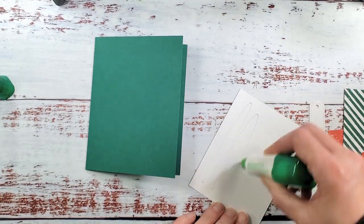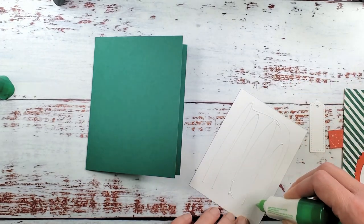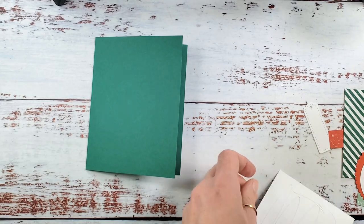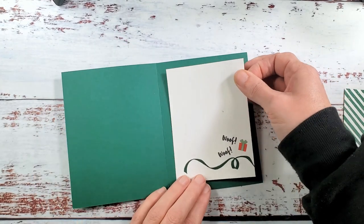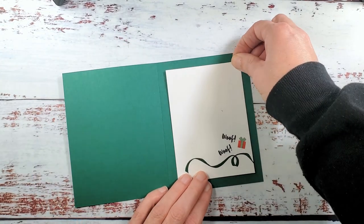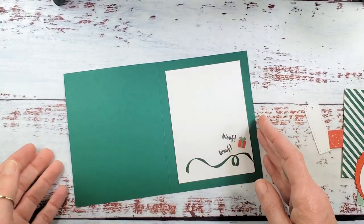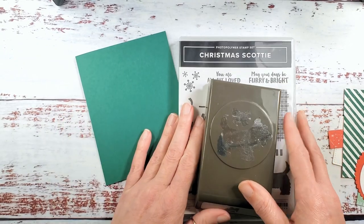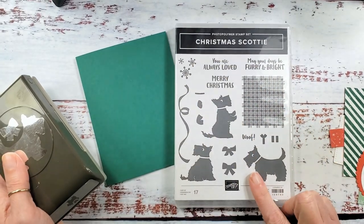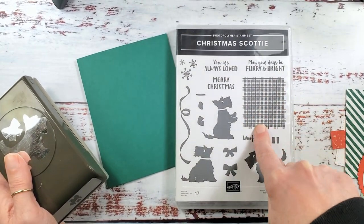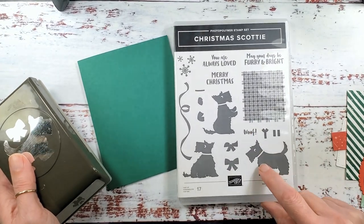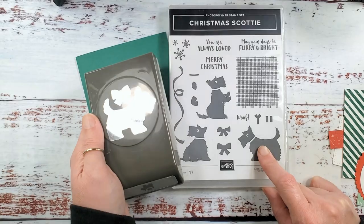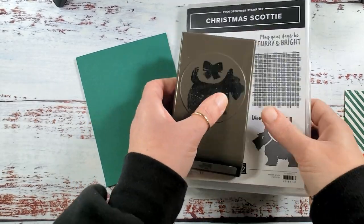Now we're going to stamp the outside of this card. No embossing on this design, we're going to shake it up a little bit and use the beautiful plaid that comes in this Christmas Scotty bundle. The Christmas Scotty bundle is a photopolymer stamp set, 17 pieces, and we're going to use this plaid background this time along with our Scotty dog that works with the dog punch, the Scotty builder punch.